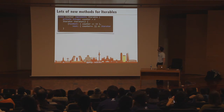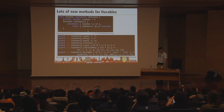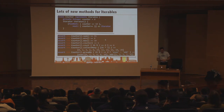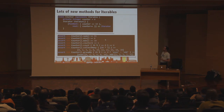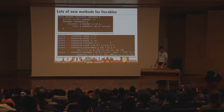Lots of methods have been added to Iterables and Iterators. We added the usual GDK methods like sum, count, findAll, groupBy, etc. Now, as long as your class implements Iterable and provides a custom iterator, you can use those methods directly without having to call .iterator() first or convert to a list. It's a convenient shortcut.